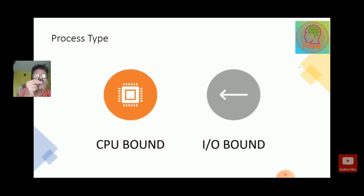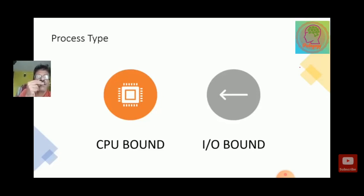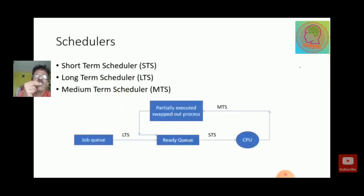A process may be either CPU bound or IO bound. So whenever the process scheduler schedules a process, it must check whether it is under the CPU bound category or IO bound category, because considering these two kinds of categories, the CPU schedules the processes as per their IO requirements, device, or resource requirements. Considering this, the scheduler divides different processes into three categories: short term scheduler, long term scheduler, and medium term scheduler.